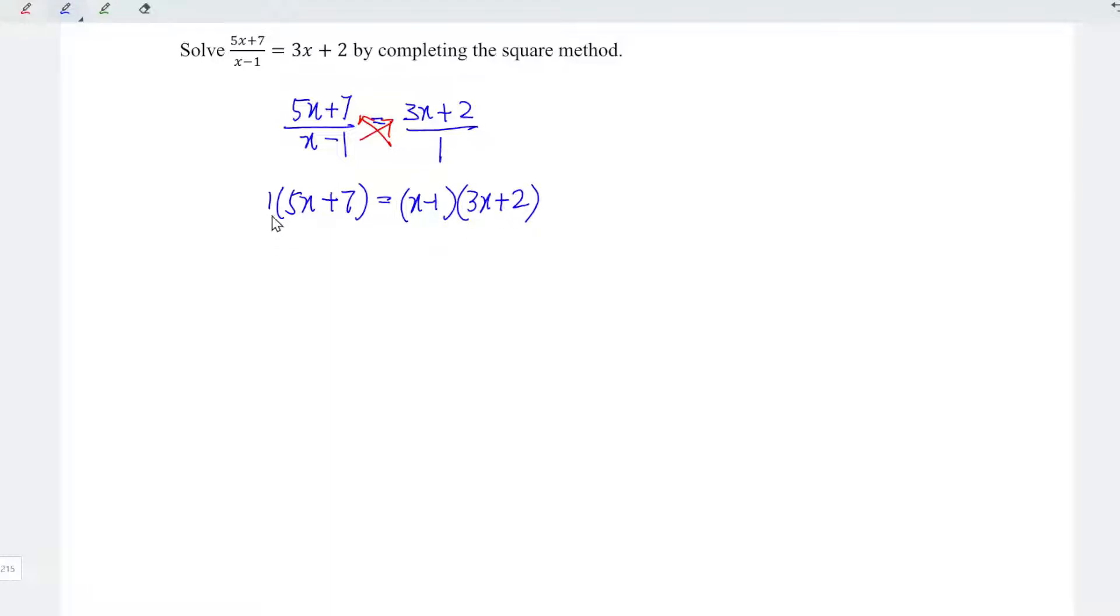Let's expand. 1 times anything, we get back the same thing. So we have 5x plus 7 on the left. And for the right-hand side, we have 3x squared minus 3x plus 2x minus 1x minus 1 times 2 minus 2.